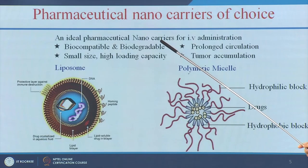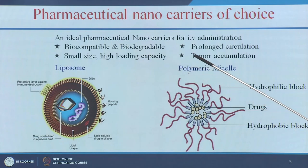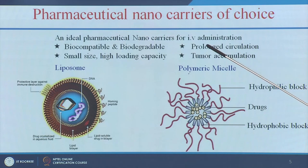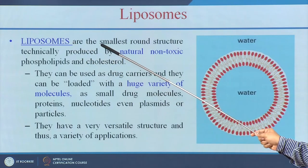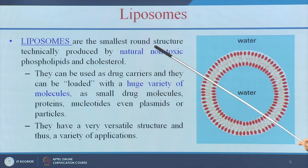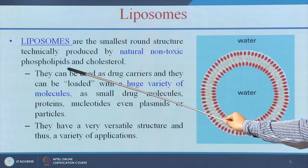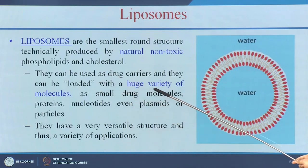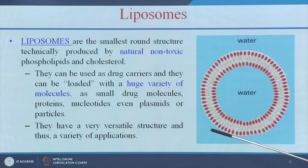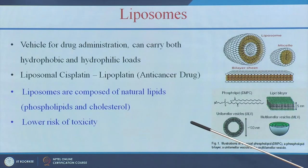We use lipids as nano carriers for drug delivery because they are biocompatible and biodegradable, have high loading capacity, and also have the property of prolonged circulation and tumor accumulation. Liposomes are the smallest round structures made by naturally non-toxic phospholipids and cholesterol. They can act as very good drug carriers and can carry plasmids, nucleic acids, and more, giving them wide applications in drug delivery.